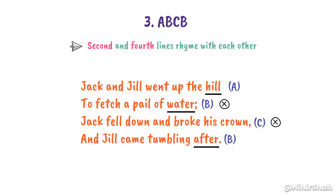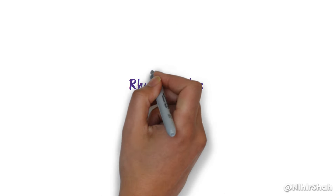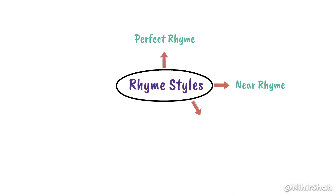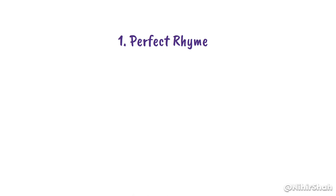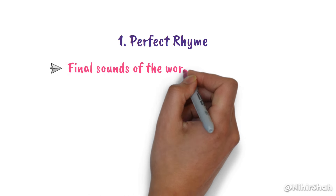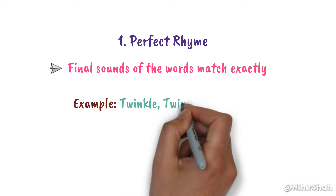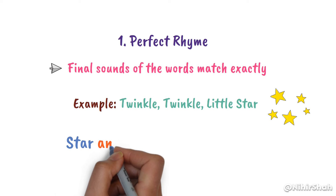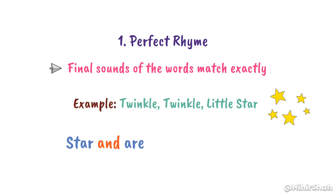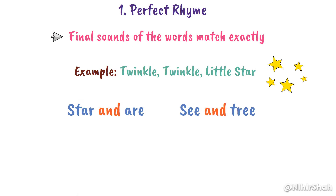So, that's all about rhyme schemes. Now let's understand rhyme styles. There are mainly 5 types of rhyme style. Number 1, Perfect Rhyme. This is the most common type, where the final sounds of the words match exactly. In Twinkle Twinkle Little Star, 'star' and 'are' rhyme perfectly. Similarly, 'sea' and 'tree' are perfect rhymes.